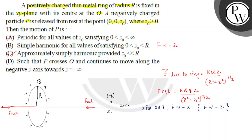Option D says that particle P crosses the origin and continues to move along the negative z-axis toward z = −∞. This is wrong because the ring will attract the particle back, so option D is incorrect.